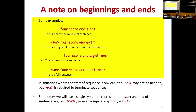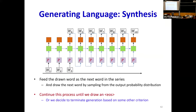When modeling language, the start-of-sequence tag will have meaning as a conditioning term. P of w given SOS means: what is the probability that this word could be the first word in a sentence? EOS is almost never going to be a conditioning term, because once the sentence has ended there's nothing more that follows. But you will have assigned probabilities to EOS — what is the probability that the sentence could end now? When generating sentences or text, at each point you'd generate a probability distribution and draw a word, continuing until you draw an end-of-sequence marker.